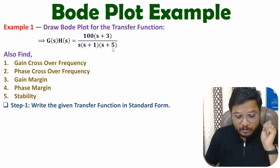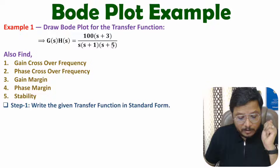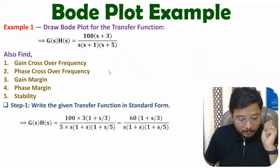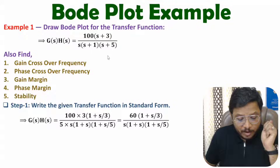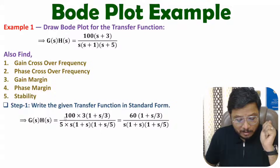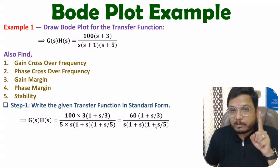To represent s + 5 in the form of (1 + s/5) we need to take 5 common. So in standard form I have taken 3 common from the numerator and 5 common from the denominator. The constant is therefore 16 × 3 divided by 5, which gives us the standard form with all terms in the form of (1 + s/something).